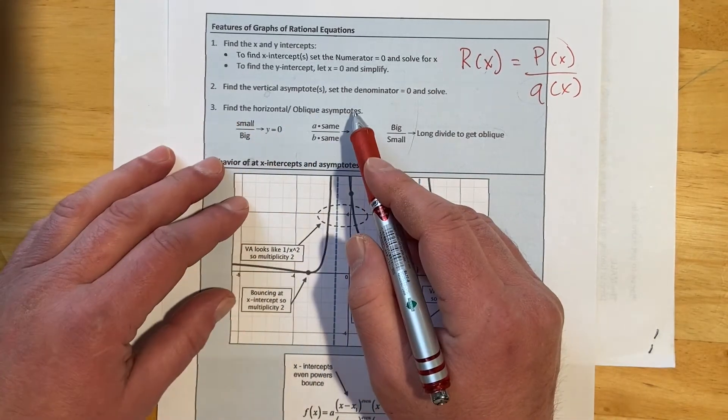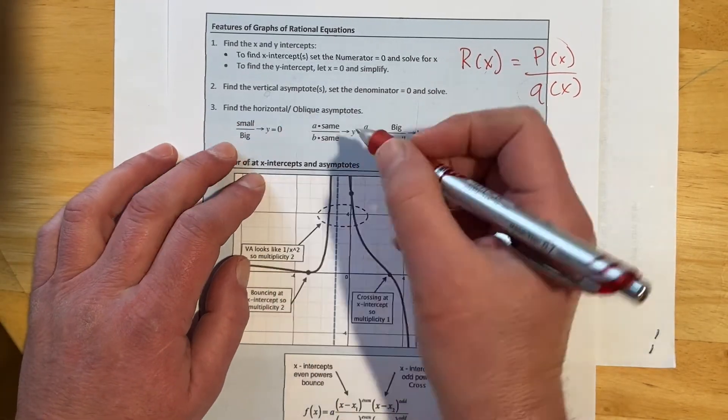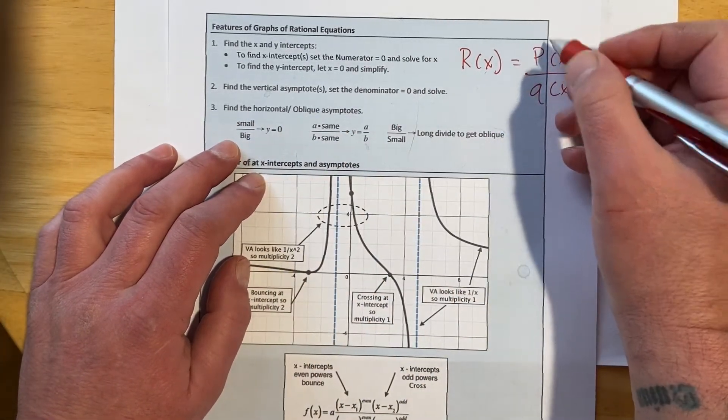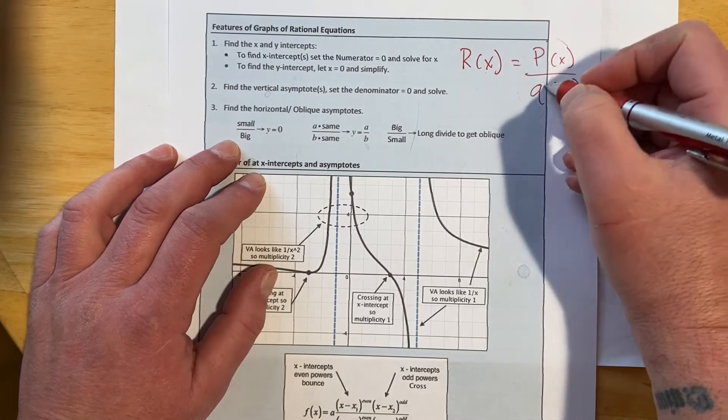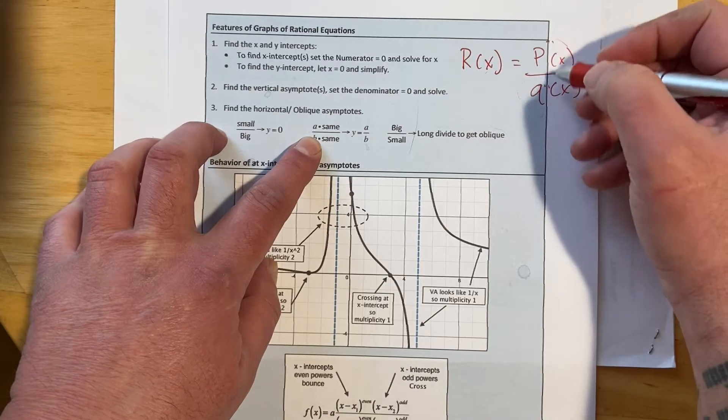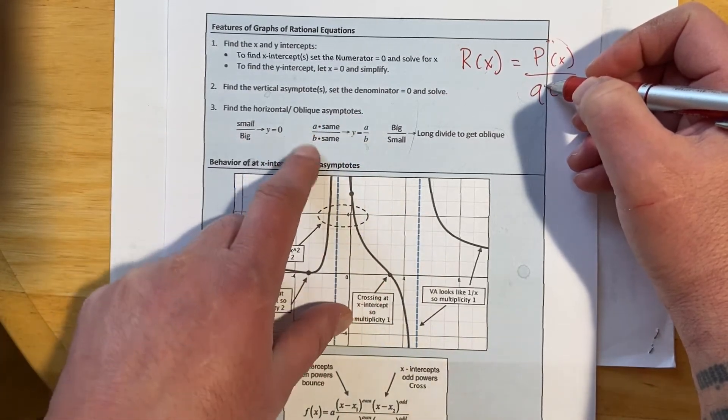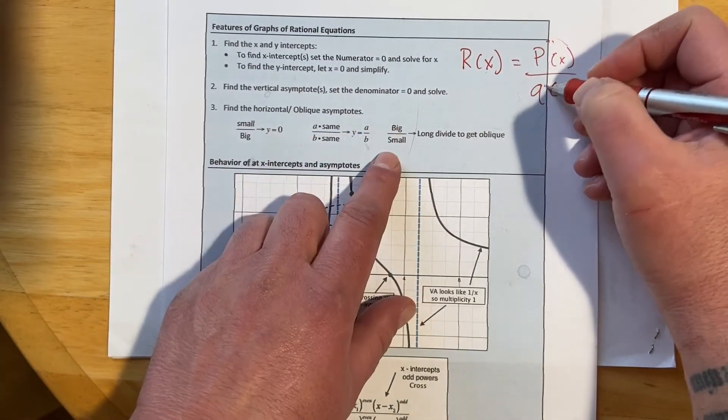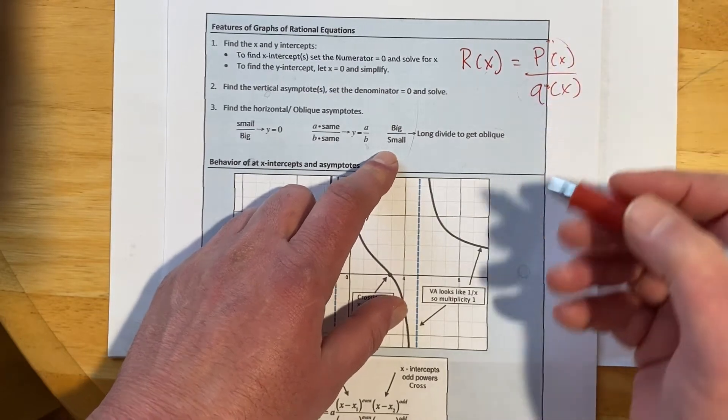And then for our horizontal or obliques, that's our degree of our polynomial. So if it goes small over big, that's going to be Y equals 0. If they're both the same, then that's where we do the ratio of the leading coefficients. And if it's big over small, we long divide to get the oblique.